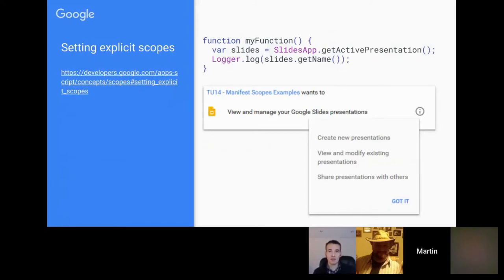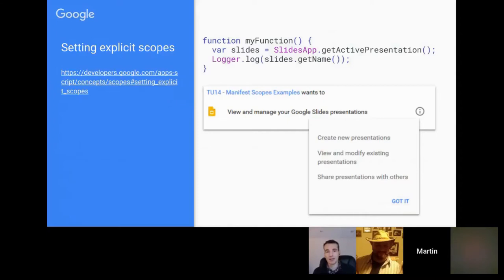Here's an example with the Slides app. If you include SlidesApp in your script project, when the user goes through the authentication flow, they'll be prompted with a notification that the script will 'view and manage your slide presentations.' Clicking the information button shows just how broad that is: create new presentations, view and modify existing presentations, and share presentations with others.